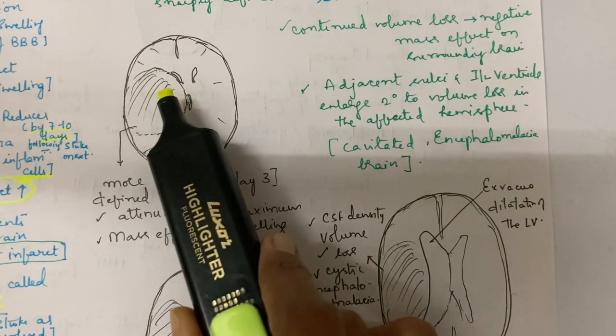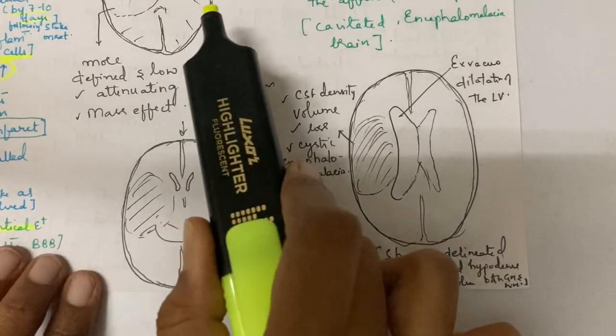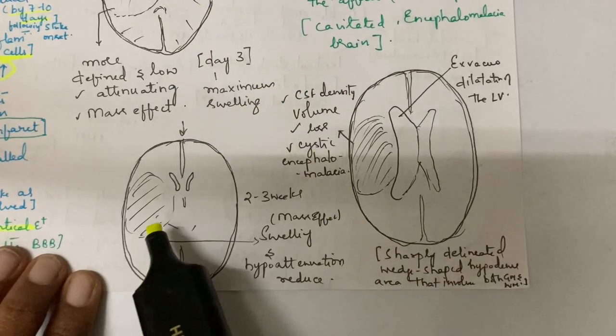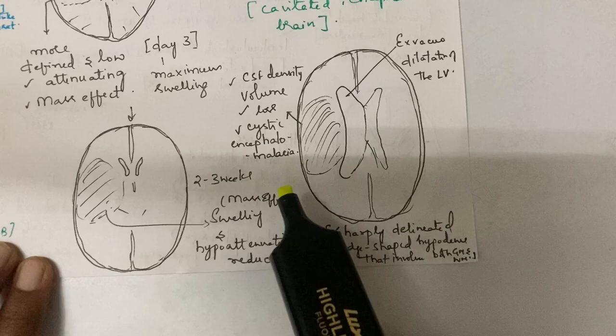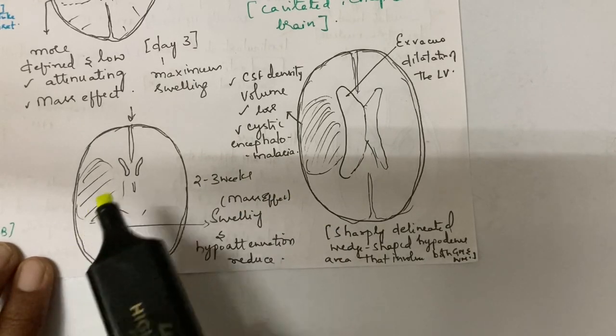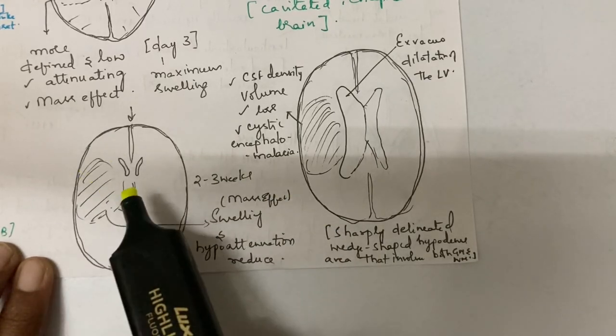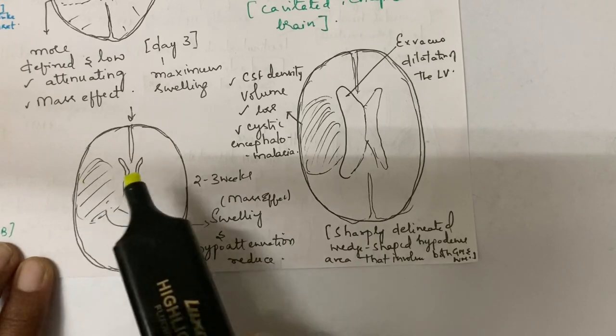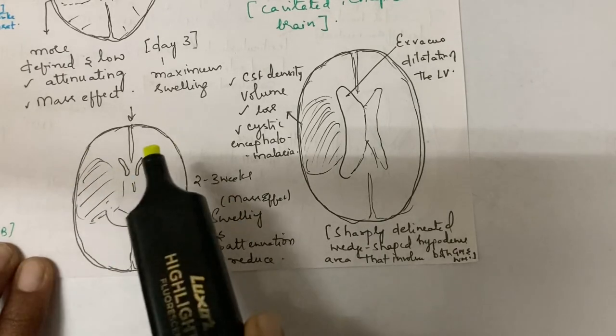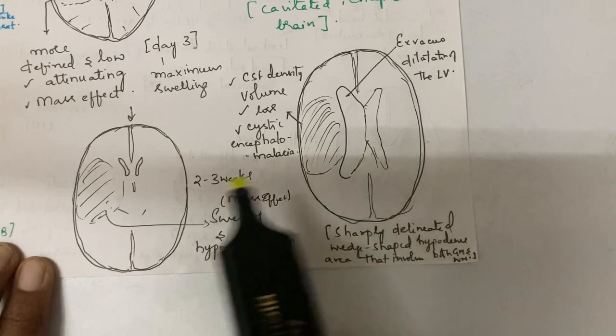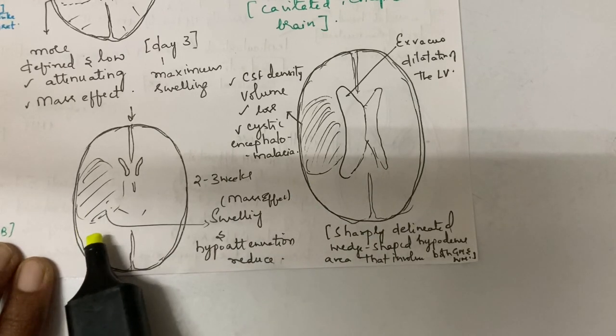This is during day three with maximum swelling. At two to three weeks, mass effect decreases, swelling decreases, there is influx of inflammatory cells, and density increases. Sometimes it may appear normal unless contrast is given. That's called fogging. Here you can see swelling decreases and hypoattenuation also decreases.